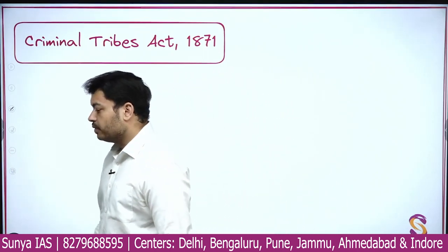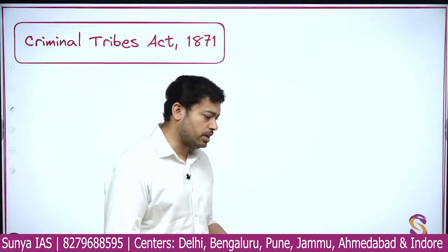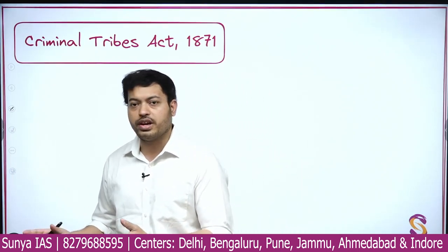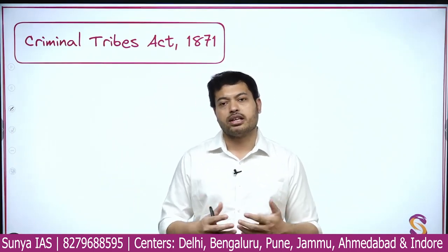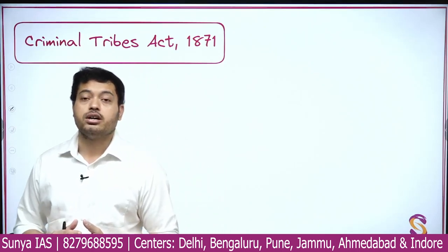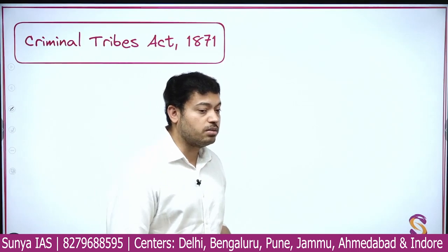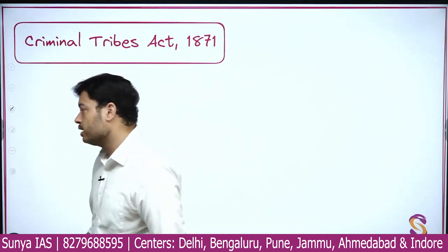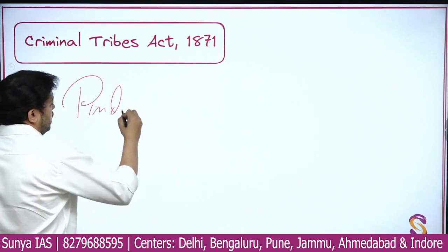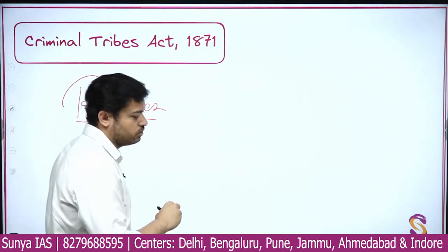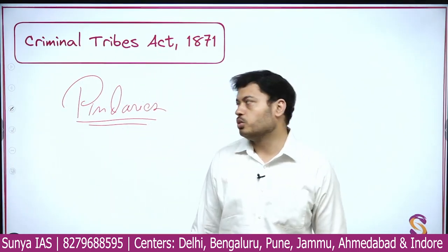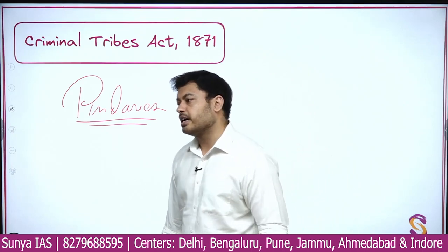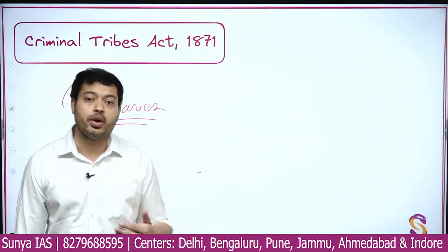Next is the Criminal Tribes Act 1871 — again something very important. You must have heard that sometimes a revolutionary was arrested and their whole village or community had to pay for it — whole communities were evicted from lands or the whole community was arrested for the misdoing of a single person. When the British came, they saw in the 18th century groups like the Pindaris and other factions. The British developed the notion that in India there are many communities and tribal groups who would act in what they called an illegal manner.